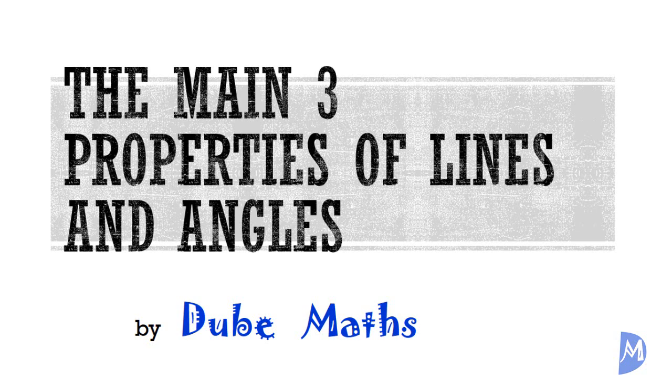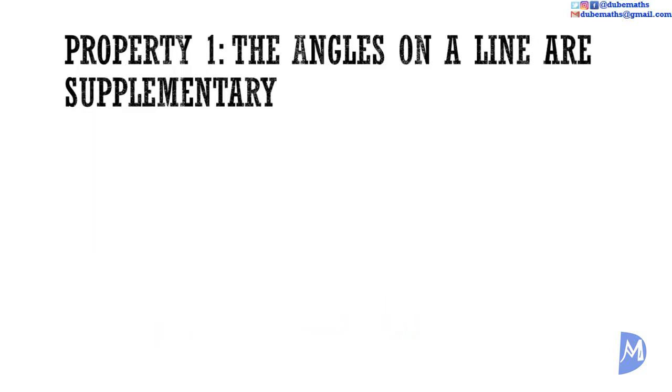The main three properties of lines and angles. Property 1: the angles on a line are supplementary.